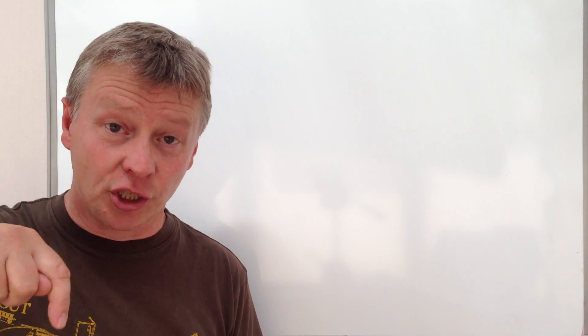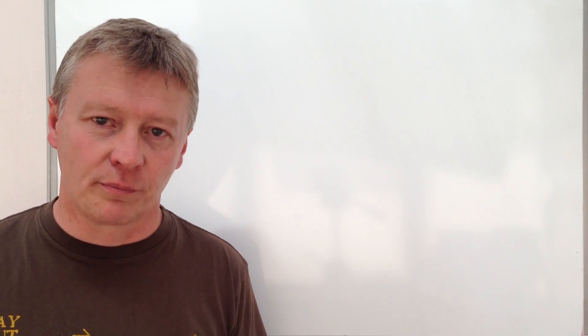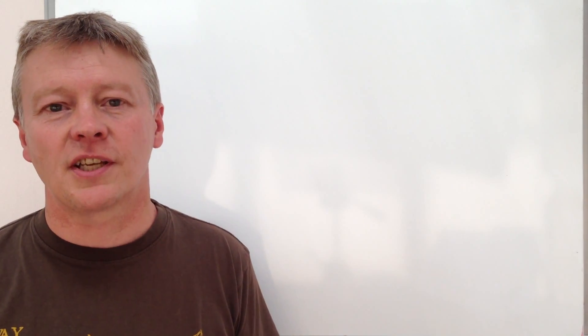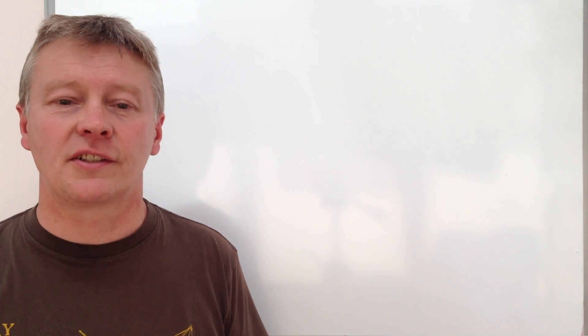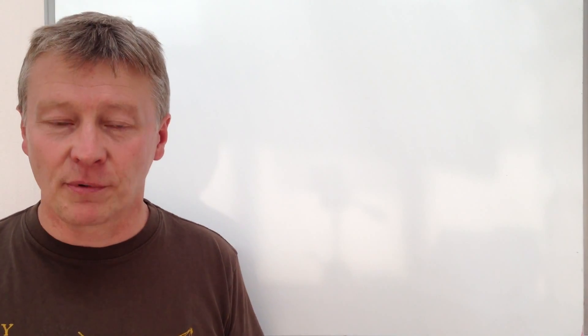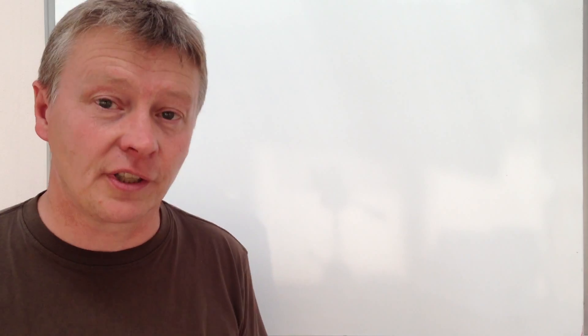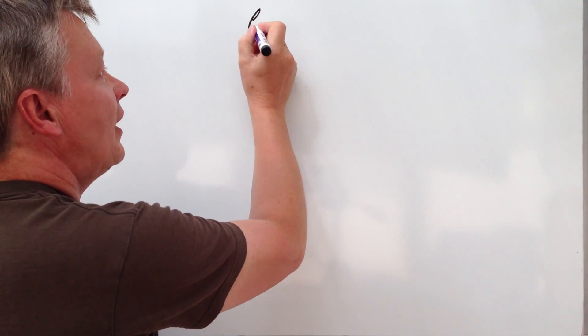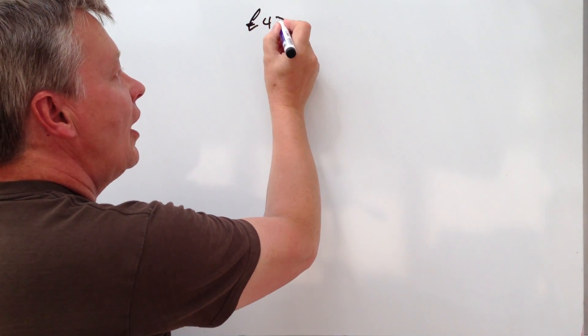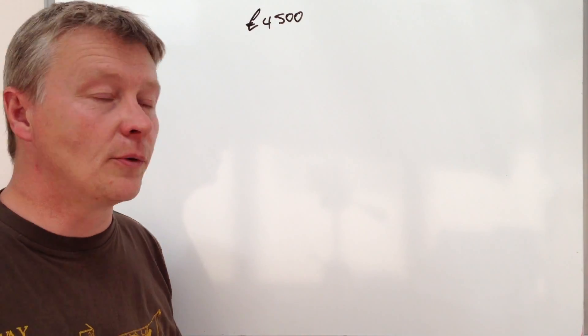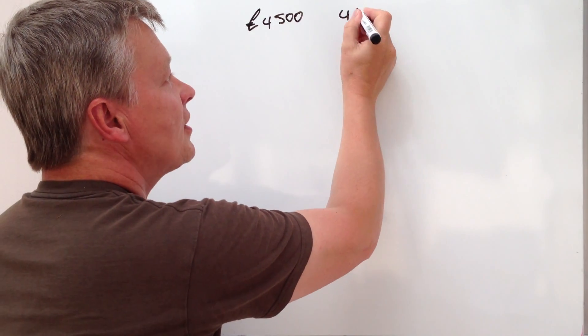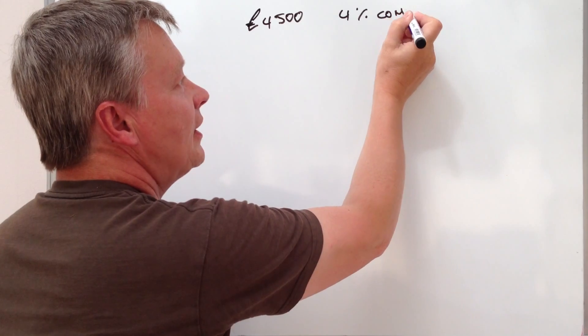I'm going to post the question just below the video in the description box. It's aimed at GCSE roundabout B grade and it concerns somebody who's got an investment of £4,500. They're going to put £4,500 into a bank account and in that bank account they're going to earn 4% compound interest.